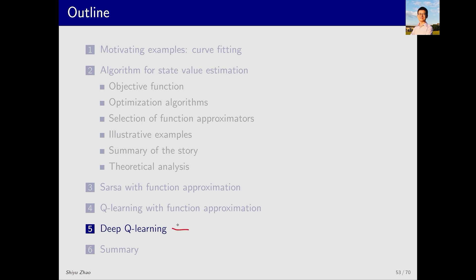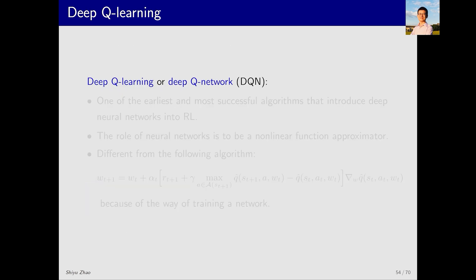Next we introduce the classic Deep Q-learning algorithm. I will introduce not only what the algorithm is and how to use it, but also many of the detailed techniques involved. Deep Q-learning is also called DQN, Deep Q Network, which is the name used in the original paper. Deep Q-learning is also a widely used name. We call it Deep Q-learning because we want to emphasize that it is a variant of Q-learning.